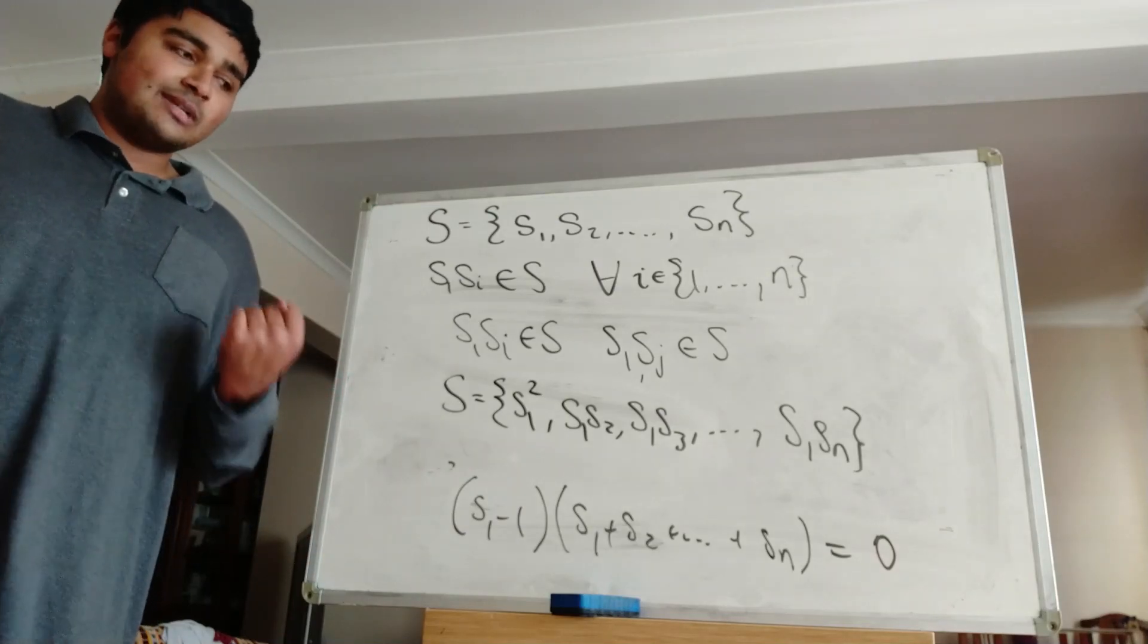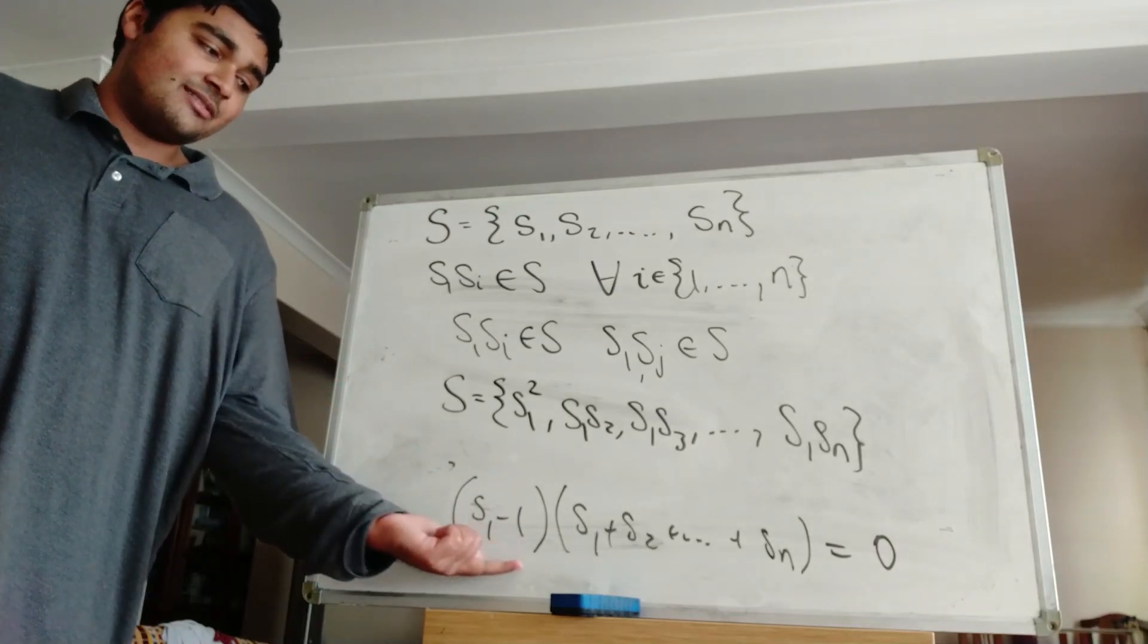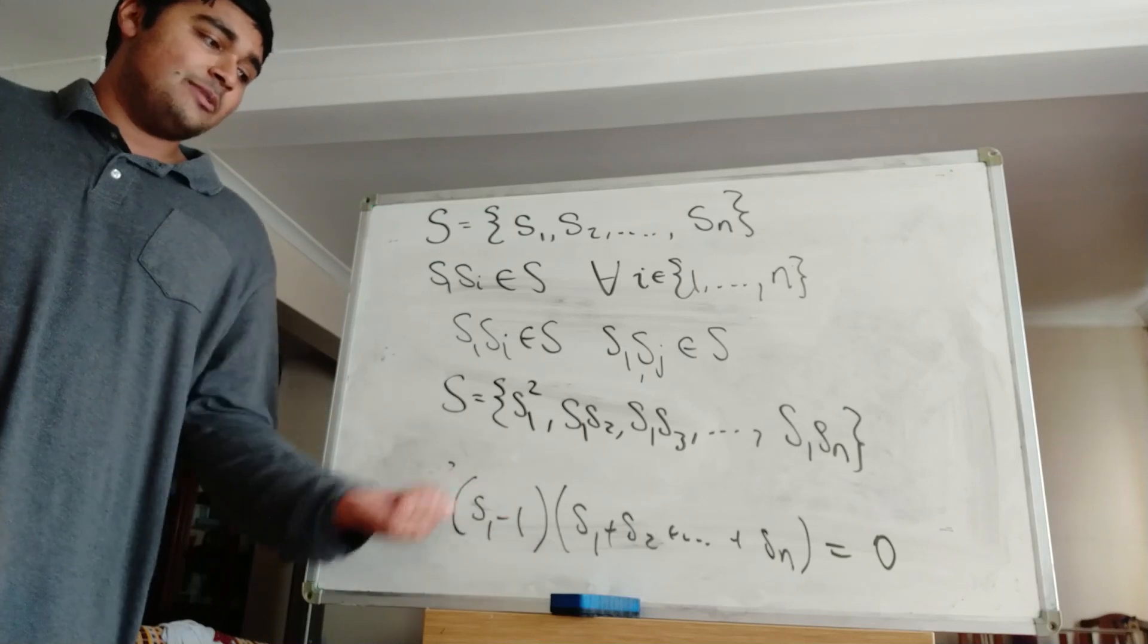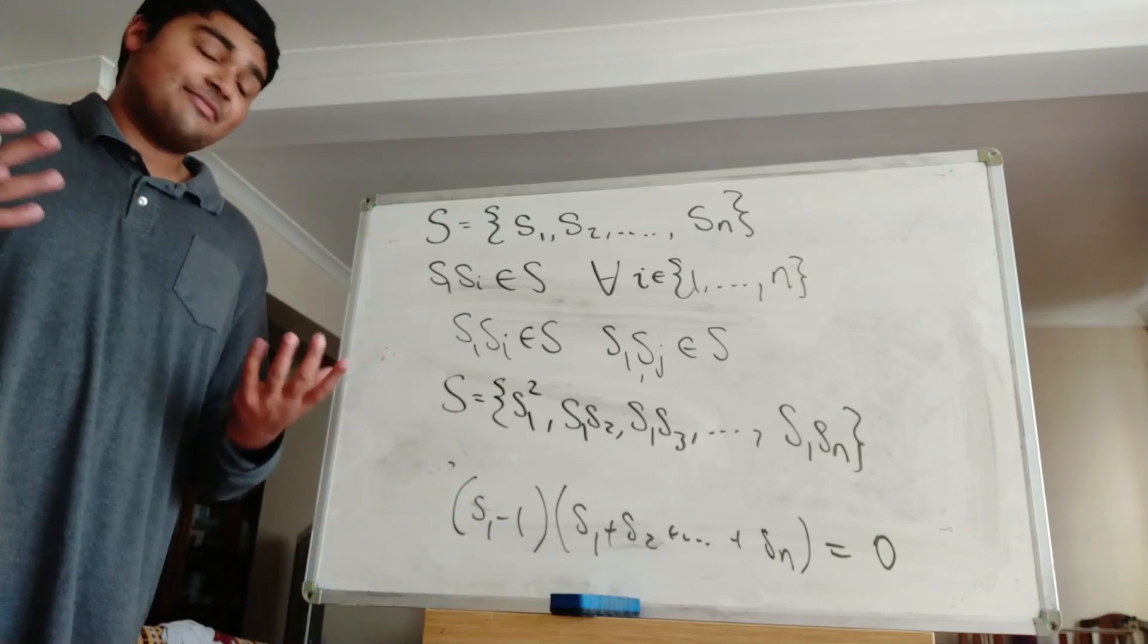Now, the issue is if S1 equals 1, then we can't just cancel this from both sides because obviously this will be non-zero. If S1 isn't 1, then that's fine.